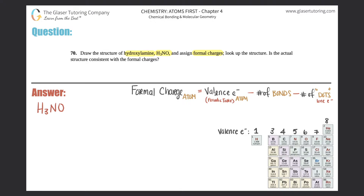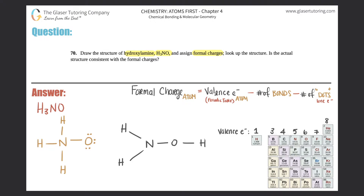I can write it basically like this, where I have the three hydrogens all bound with the nitrogen, and then I have an oxygen with a lone pair. Then maybe we'll do something crazy — maybe it's not drawn like that, and maybe there's only two hydrogens on the nitrogen, and the other hydrogen is bound to the oxygen. You have to think of all the possibilities in chemistry.